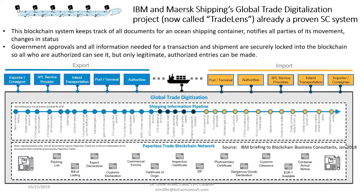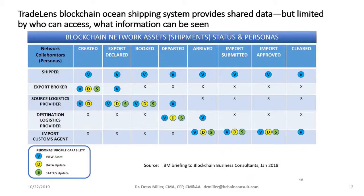Studies have shown that 30 different organizations can be involved in an ocean shipping transaction, so trying to connect 30 companies' IT systems together would be a mess — but you can connect them fairly easily on blockchain. This system runs on Hyperledger Fabric, a private permissioned blockchain. IBM is a major backer of Hyperledger and developed a major part of it. Most businesses will want to run on private blockchains rather than public blockchains like Ethereum, which is much slower and has other disadvantages.